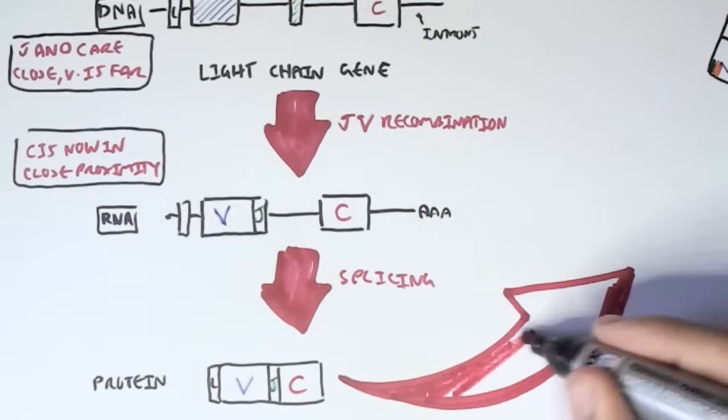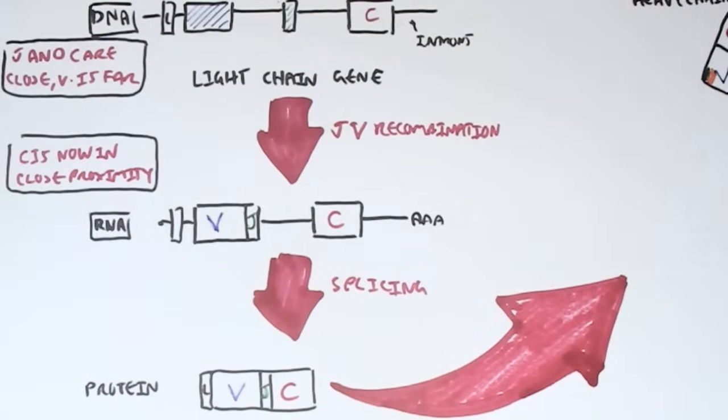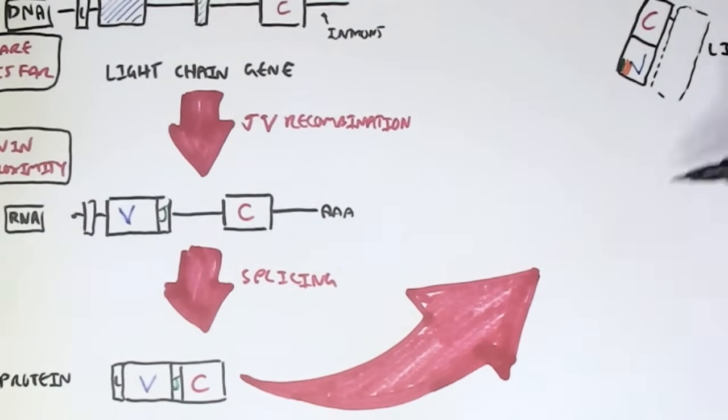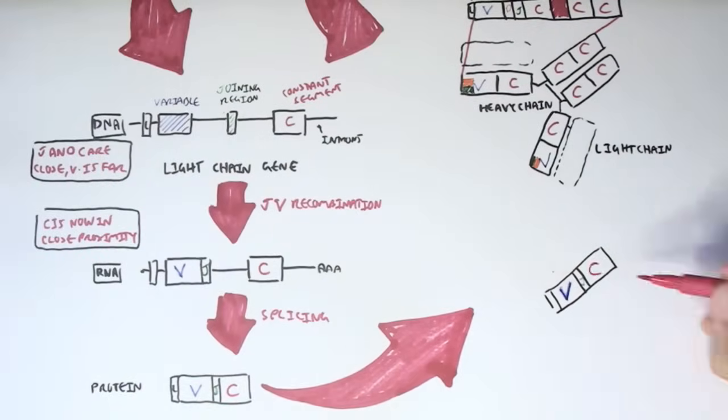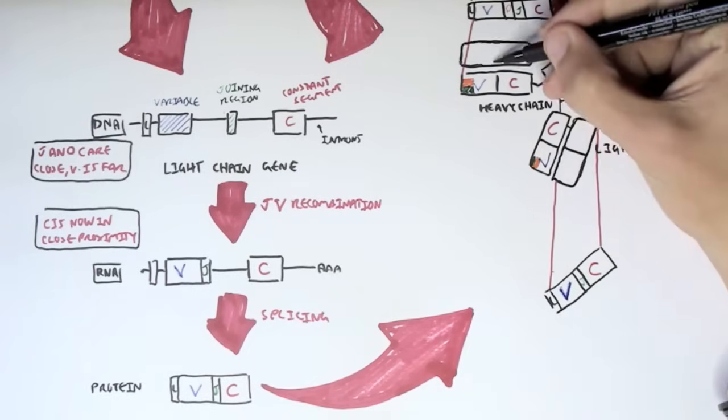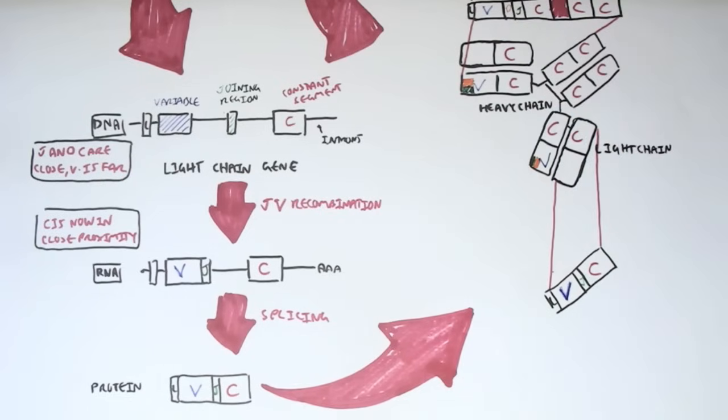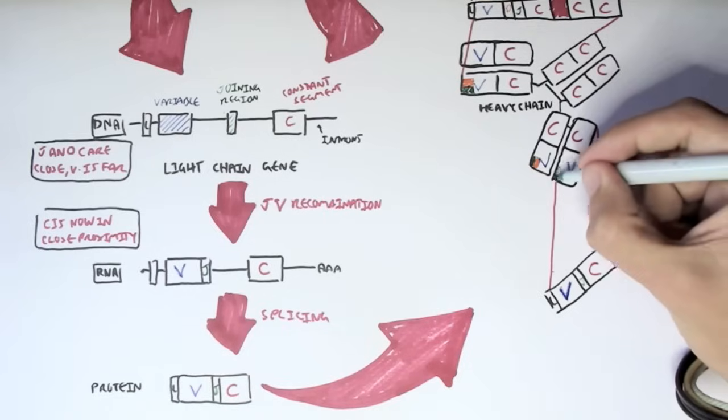And so now we are left with an mRNA with the leader, V, J and C regions, which will essentially make the protein. And so as we've seen, the light chain gene has made a light chain protein, which will make this particular antibody. So the light chain fits this antibody, V and C regions, with the joining region here.